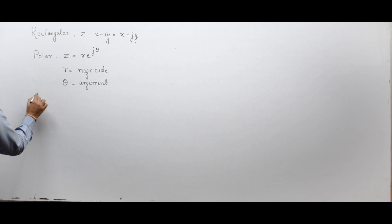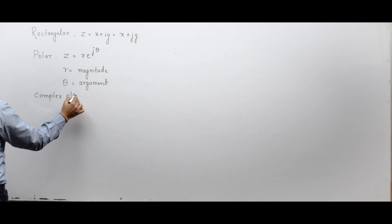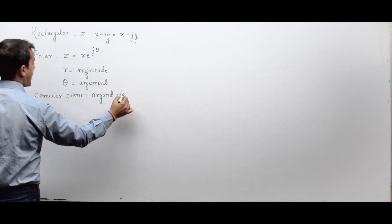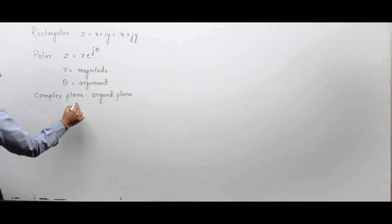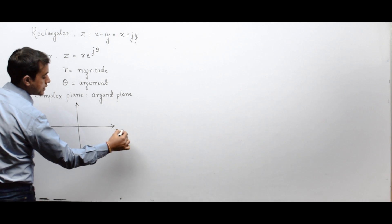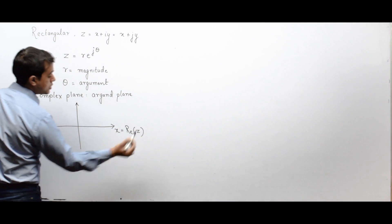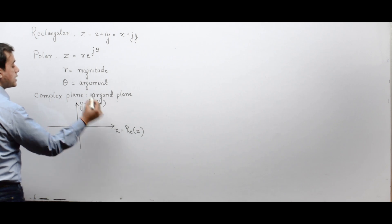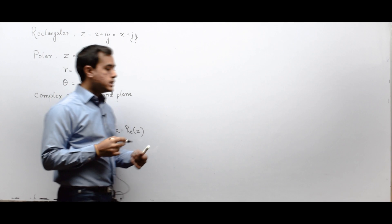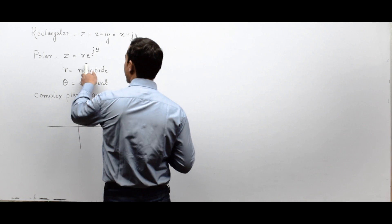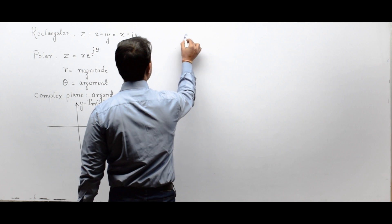The two-dimensional plane in which we represent complex numbers is called the Argand plane or complex plane. It has an x-axis representing the real part of z and a y-axis representing the imaginary part of z.